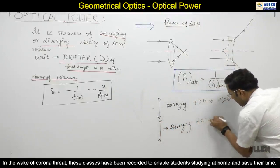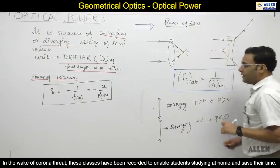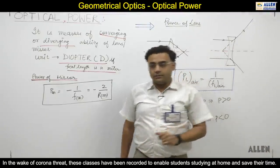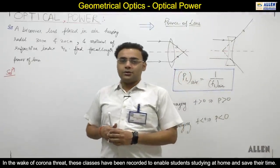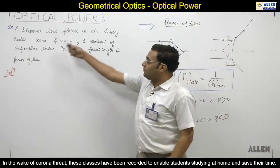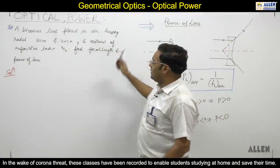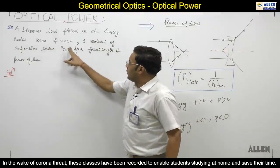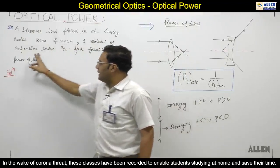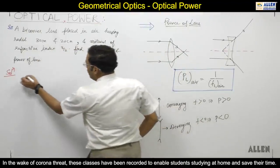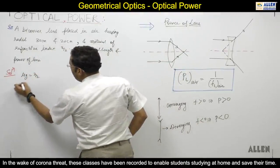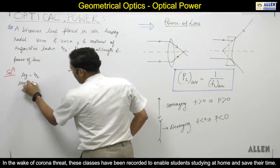This question - now we are going to solve one question on power. The question is: a bi-convex lens placed in air having radii 30 and 20, and material of refractive index 3 by 2. Material refractive index μg = 3/2, and μ medium is 1 for air.